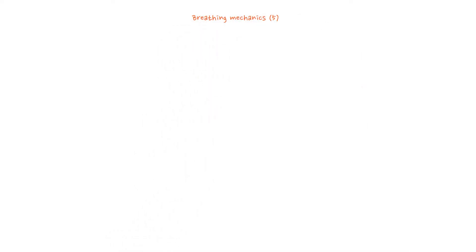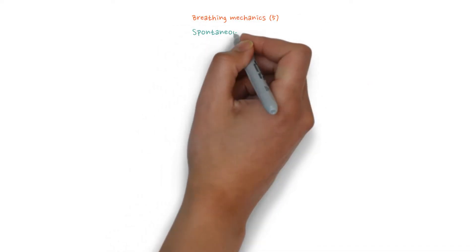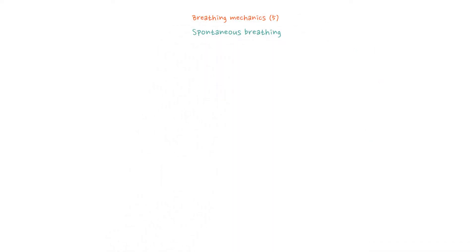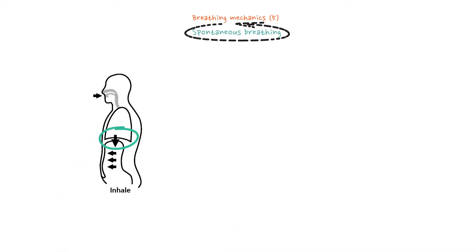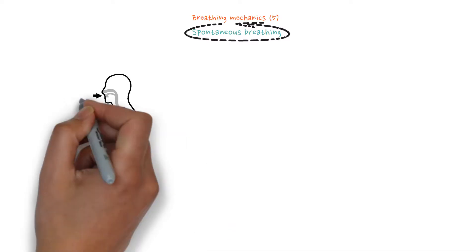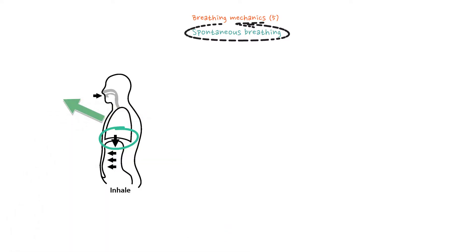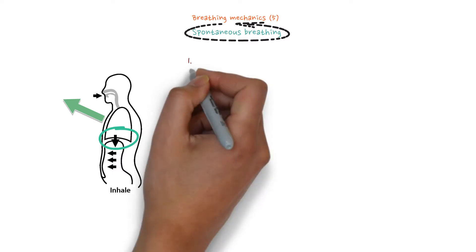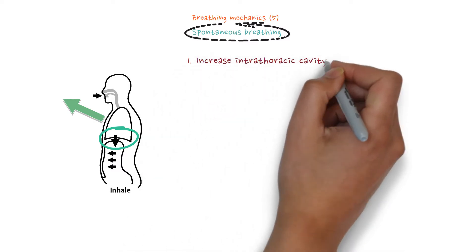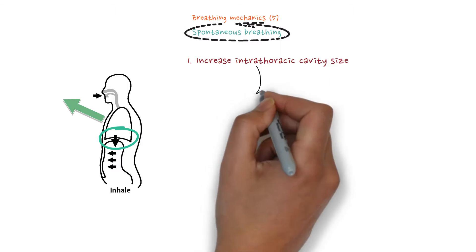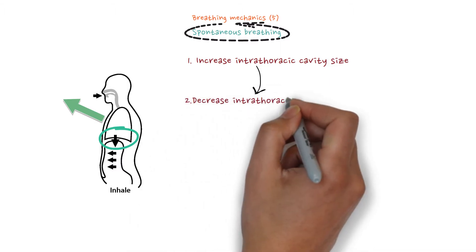In this video we'll talk about spontaneous breathing and how the breathing mechanics we studied in previous videos explain spontaneous breathing. When we want to breathe in, we move our diaphragm downward and the chest wall upward and anteriorly. That will increase the intrathoracic cavity size, which will lead to a decrease in the intrathoracic pressure.